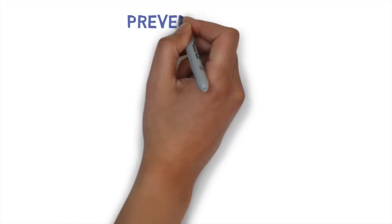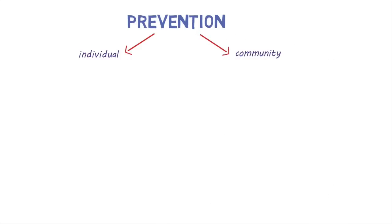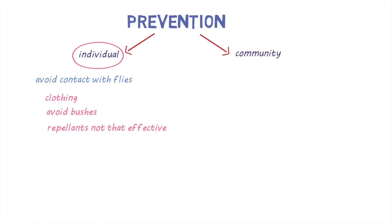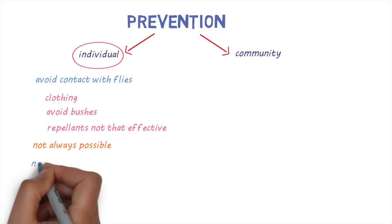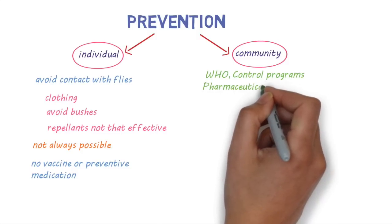So how do we prevent and control the disease? Let's have a look at individual measures and also measures that could be done at a community level. At an individual level, preventative measures focus on avoiding contact with the tsetse flies. These include wearing appropriate clothing that covers exposed parts of the body and avoiding bushes in areas where tsetse flies are known to live. Insect repellents are not that effective against these flies but may prevent other insect bites. There is no vaccine or preventative drugs that can be taken to stop people from getting the disease. Intense efforts to control the disease have been led by the World Health Organization, National Sleeping Sickness Control Programs, and others such as pharmaceutical companies and non-governmental organizations.